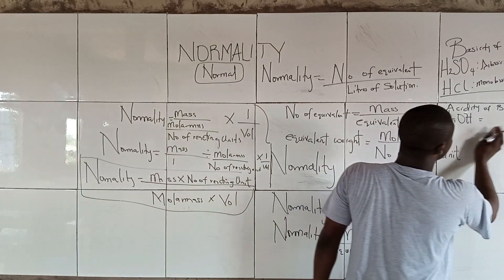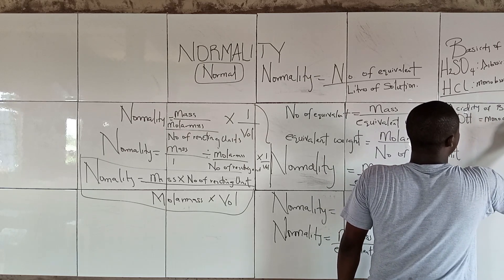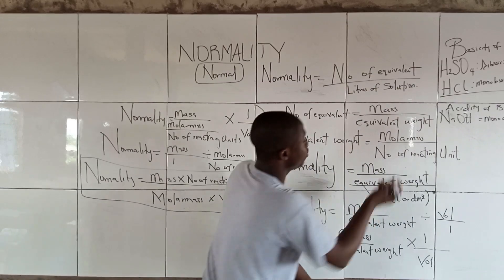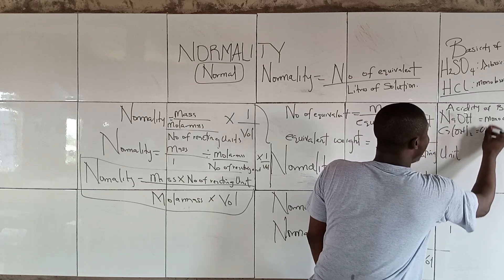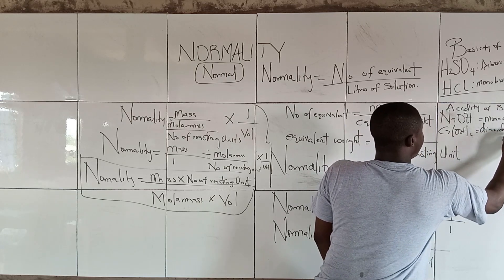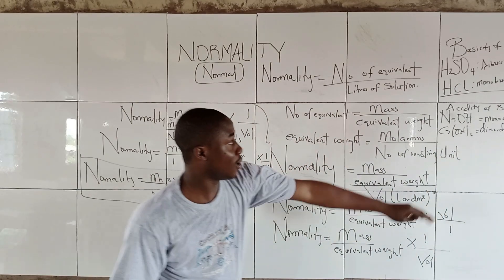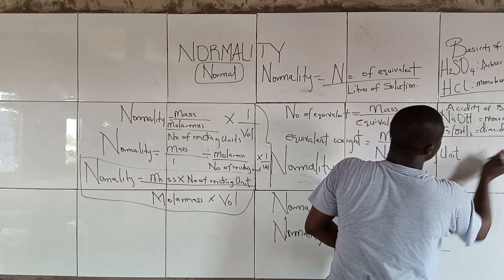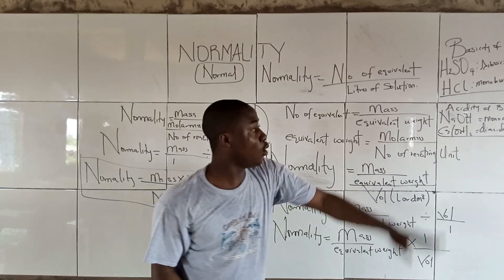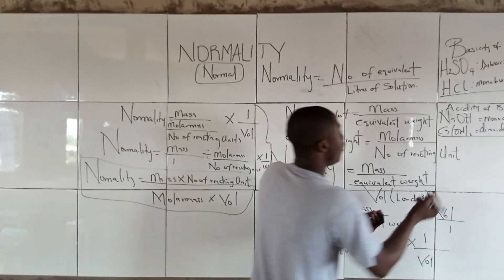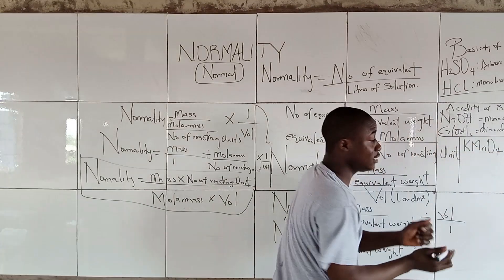Monoacidic is given to be 1. For calcium hydroxide, it is diacidic, so its number of reacting units is 2. That covers basicity of acids and acidity of bases. Now talking about oxidizing and reducing agents, these are also very common when solving normality questions.